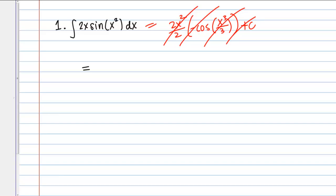I'm looking at this problem, and what I see is I have an x squared inside the sine. Then I see also that I have a 2x out front here, and the derivative of x squared is 2x.